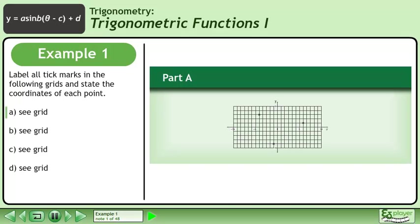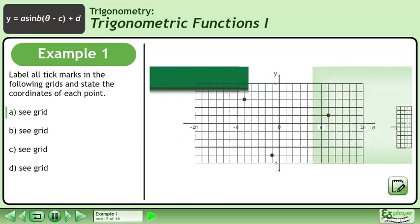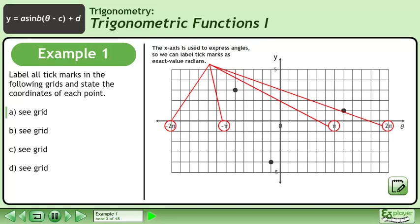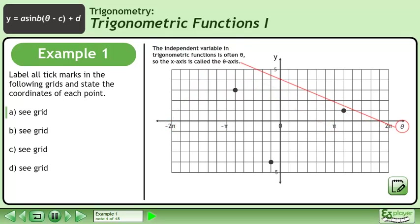Label all tick marks in the following grids and state the coordinates of each point. What you see here is called a trigonometric coordinate grid. A trigonometric coordinate grid can be used to graph trigonometric functions. The x-axis is used to express angles, so we can label tick marks as exact value radians. The independent variable in trigonometric functions is often theta, so the x-axis is called the theta-axis.